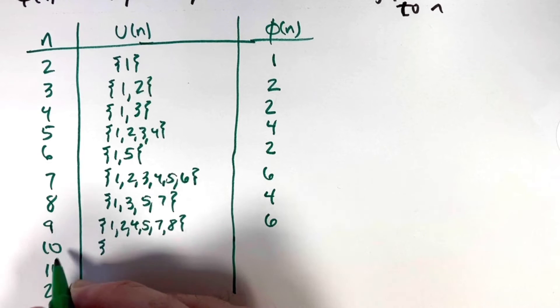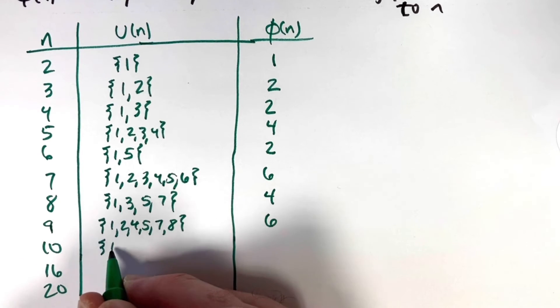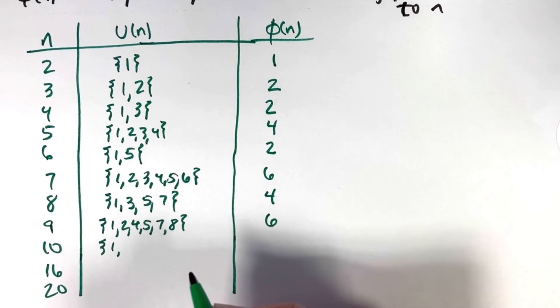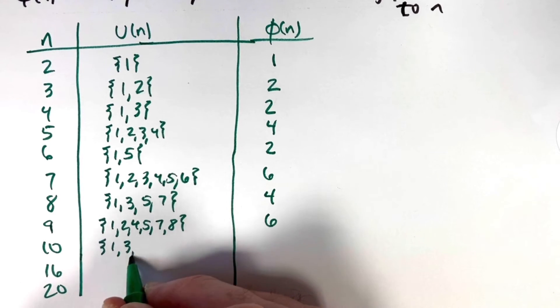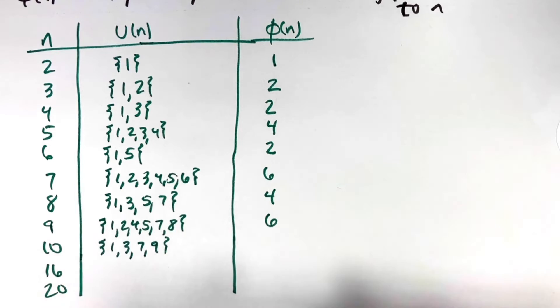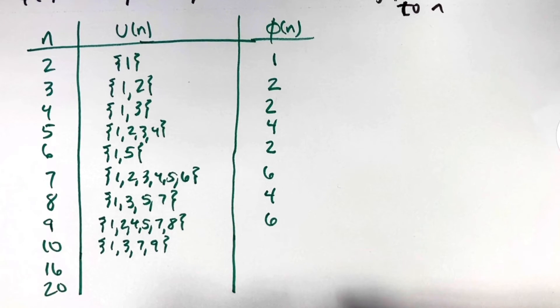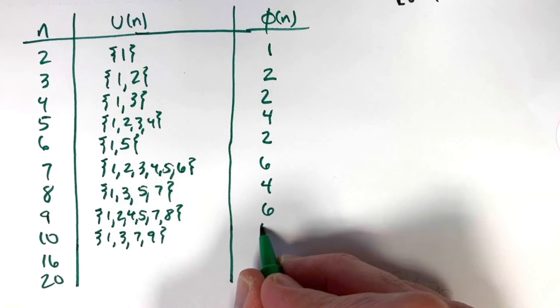When n = 10, which is 2 × 5, in U(10) we want to avoid even numbers and also avoid 5. We have 1, 3, 7, and 9. There are four positive integers less than 10 that are relatively prime to 10. So φ(10) = 4.